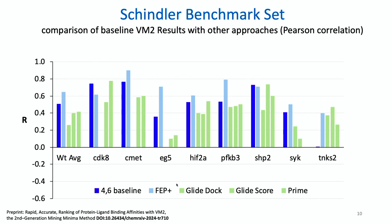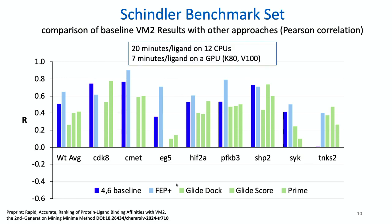Here are the results. On average, we're doing pretty well — not quite as good as FEP+, but we do better than docking and Prime. Some of these targets are competitive with FEP+. You'll note that for TNKS2 we get no signal whatsoever. What we do get is very quick calculations: about 20 minutes per ligand on 12 CPUs. If you have GPUs available, you can go slightly quicker at seven minutes, but we usually recommend CPUs to get the most bang for your compute buck.